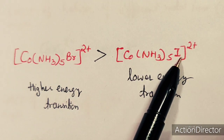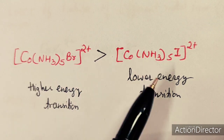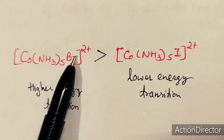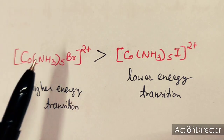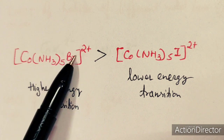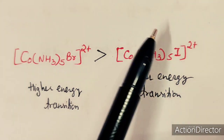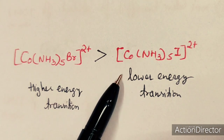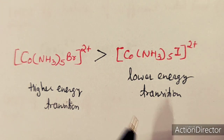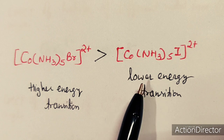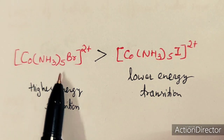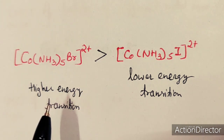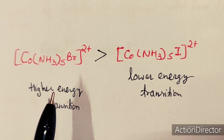Comparing two Co³⁺ complexes — one with I⁻ and one with Br⁻ as ligand — the LMCT transition of the I⁻ complex occurs at lower energy (smaller gap), while the Br⁻ complex occurs at higher energy. With I⁻, the gap is lower so lower energy is required for the electron transfer from ligand to metal.